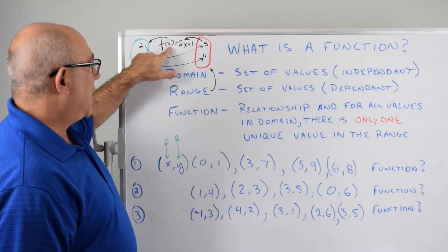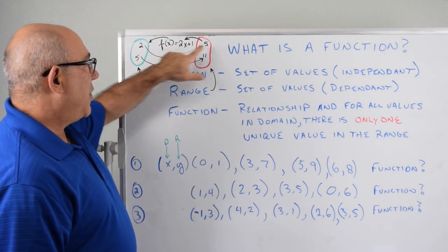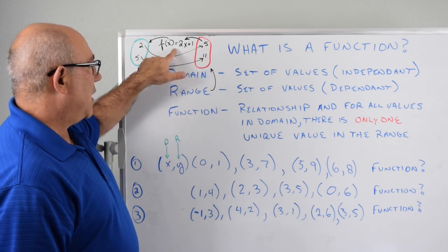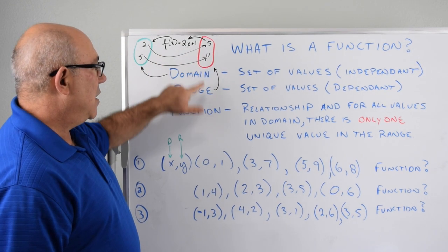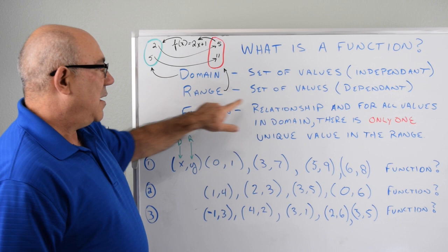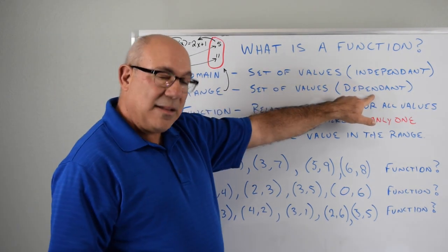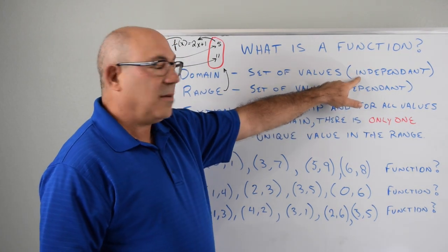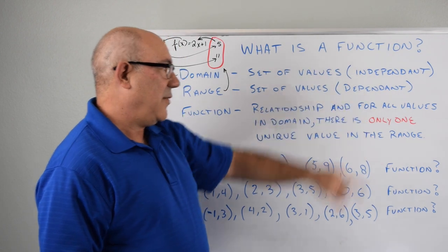But these values were plugged in and are the result of the function. So they're called the range. And that's the set of values that's dependent on the function. These are independent values. These are dependent values.